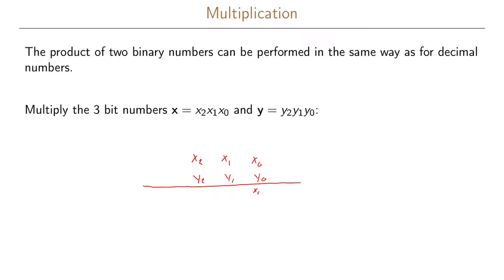In the first row we write x0·y0, x1·y0, and x2·y0. In the next step we multiply by y1, giving x0·y1, x1·y1, and x2·y1. In the third step we multiply by y2, giving x0·y2, x1·y2, and x2·y2.